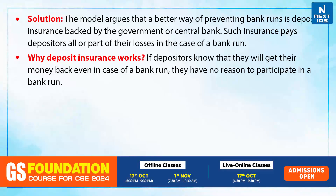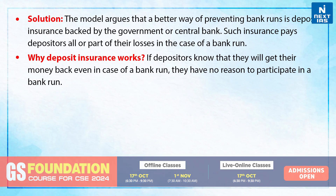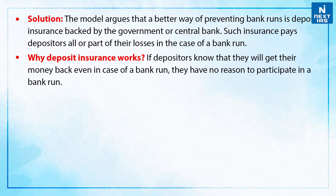So, what is the solution? The model argues that a better way of preventing bank runs is deposit insurance backed by the government or central bank. Such insurance pays depositors all or part of their losses in the case of a bank run. Now, why does this deposit insurance work? If depositors know that they will get their money back even in the case of a bank run, they have no reason to participate in a bank run.